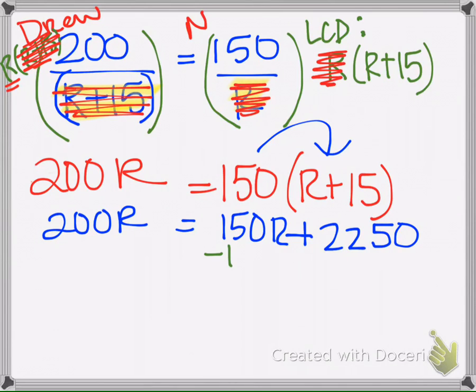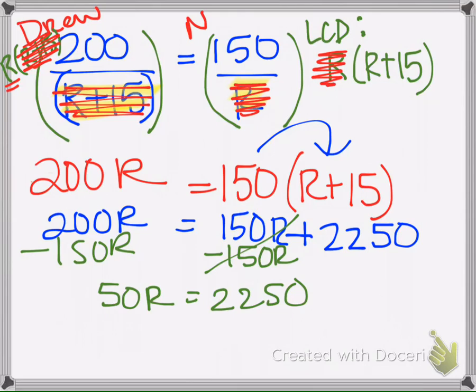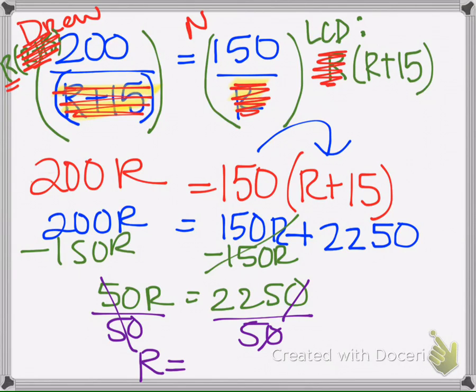We have variables on both sides so I need to get rid of one of them. Okay, so we get that R is 45.